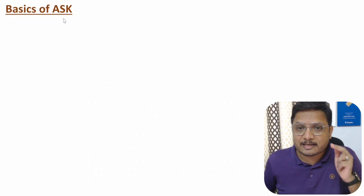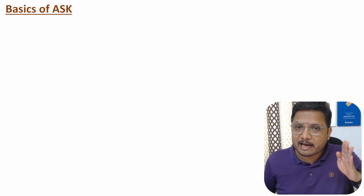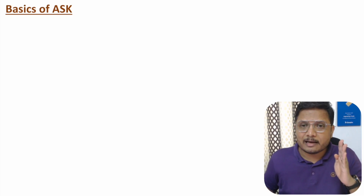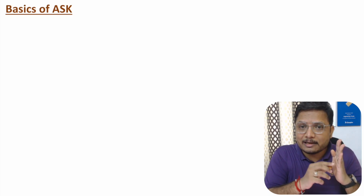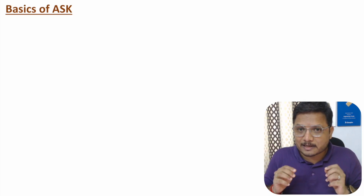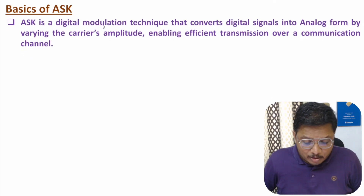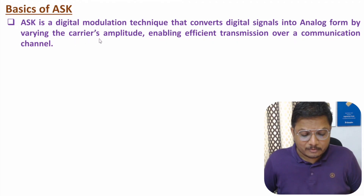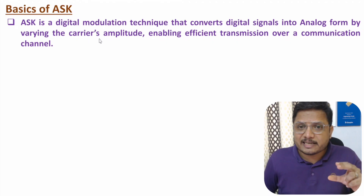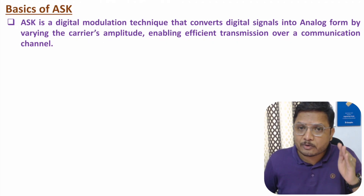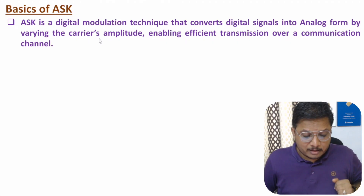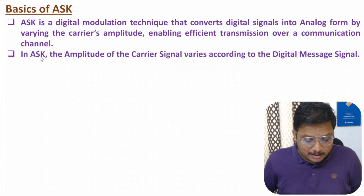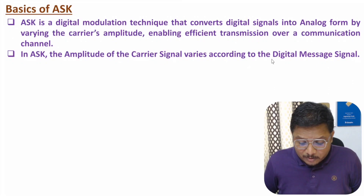ASK is a digital modulation scheme where the input signal is a digital signal and the output signal is an analog signal. ASK is a digital modulation technique used to convert digital signals into analog form by varying the amplitude of the carrier signal. We change the amplitude of the carrier signal with respect to the digital input signal.